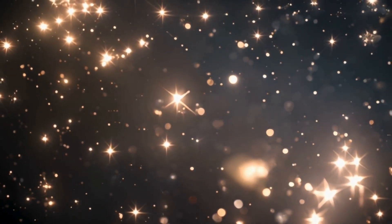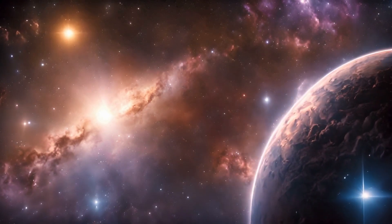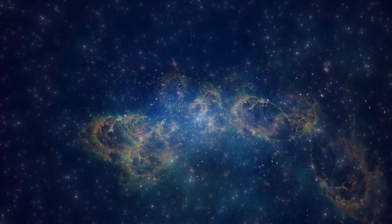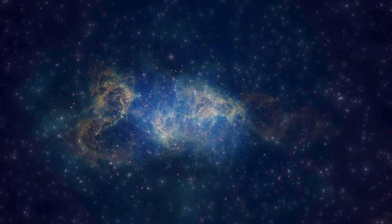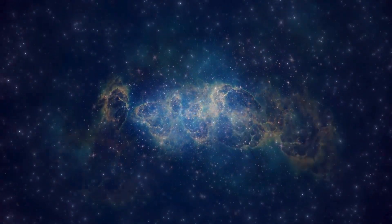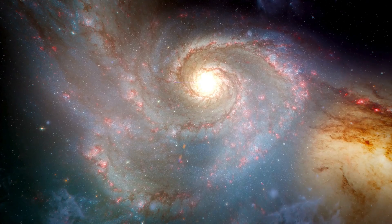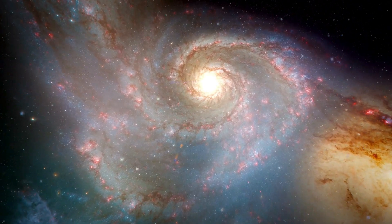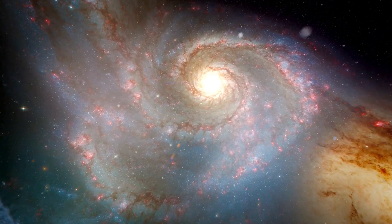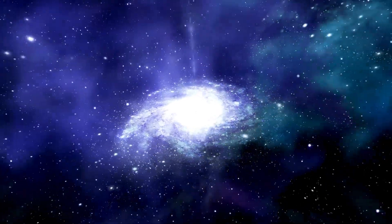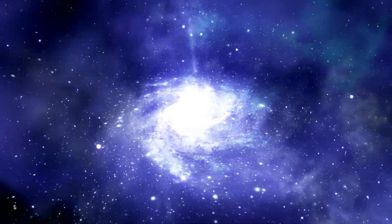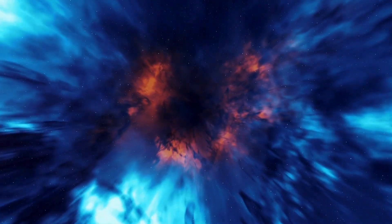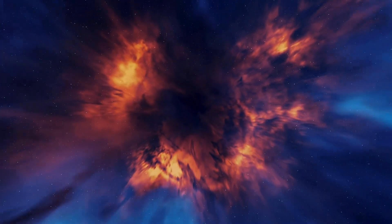A Type 1 supernova occurs when a remnant of a low-mass star collects matter from a companion star until it reaches a critical mass that it can no longer bear. As a result, it triggers a nuclear reaction and the star explodes. A Type 2 supernova occurs when high-mass stars like Betelgeuse run out of fuel and can no longer support their own structure. As a result, the star explodes, releasing an enormous amount of energy.